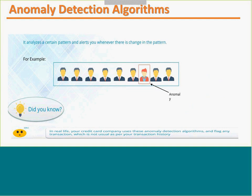The anomaly detection algorithm identifies a particular pattern, and if something deviates from that pattern, it alerts the system. For example, if all data points are blue but one is red, the anomaly detection algorithm identifies that activity and alerts the system. This kind of algorithm is typically used by credit card and bank companies for fraud detection.